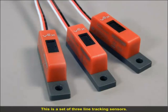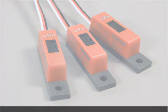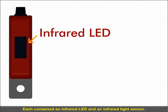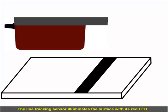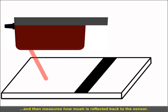This is a set of three line tracking sensors. Each contains an infrared LED and an infrared light sensor. The line tracking sensor illuminates the surface with its infrared LED and then measures how much is reflected back to the sensor.